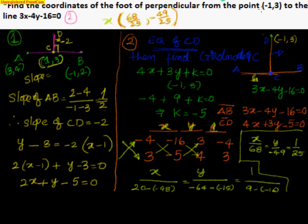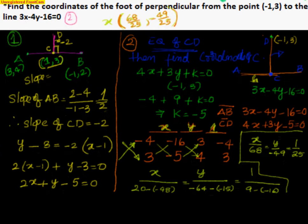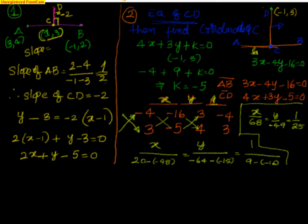The second problem: find the coordinates of the foot of perpendicular from the point (-1, 3) to the line 3x - 4y - 16 = 0. The foot of the perpendicular is the point of intersection of the line and the normal to it. Point C in the figure is the foot of the perpendicular. We have the equation of AB as 3x - 4y - 16 = 0, and we know the point (-1, 3) from which the perpendicular is drawn. We need to find C — we form the equation for CD, then use cross multiplication to find point C.